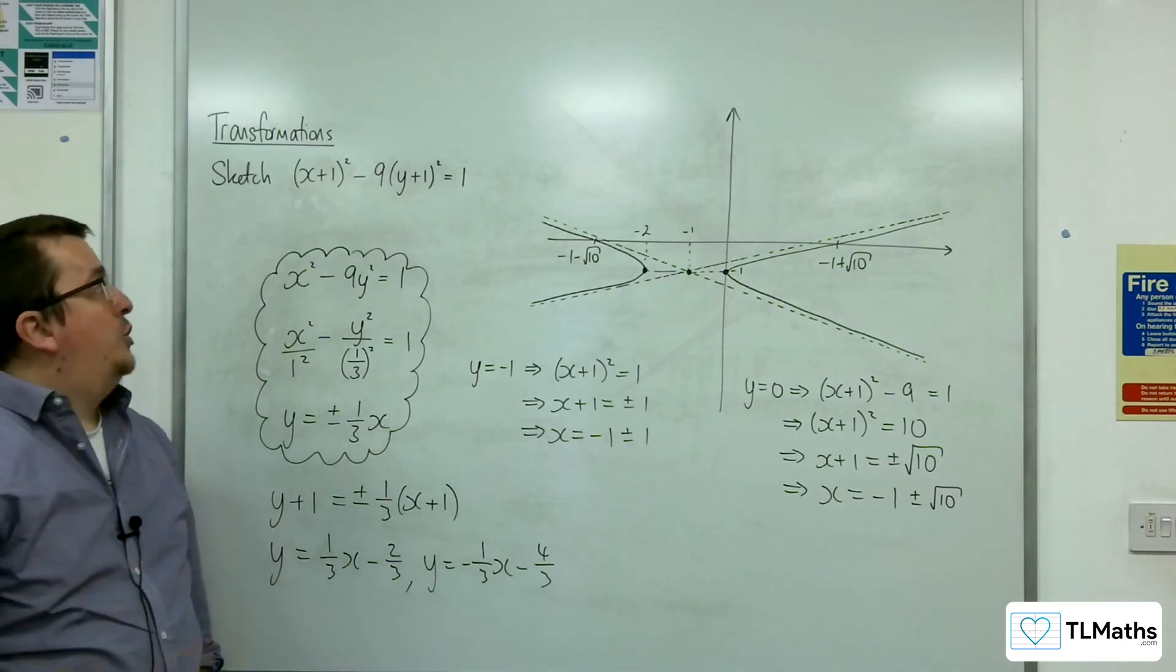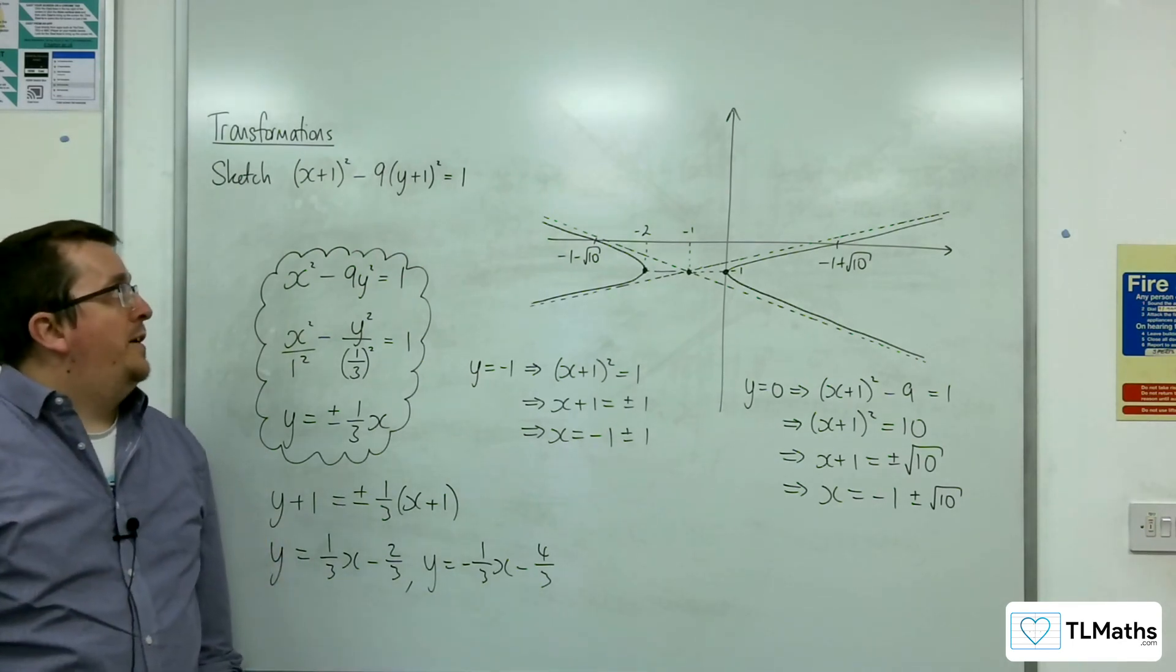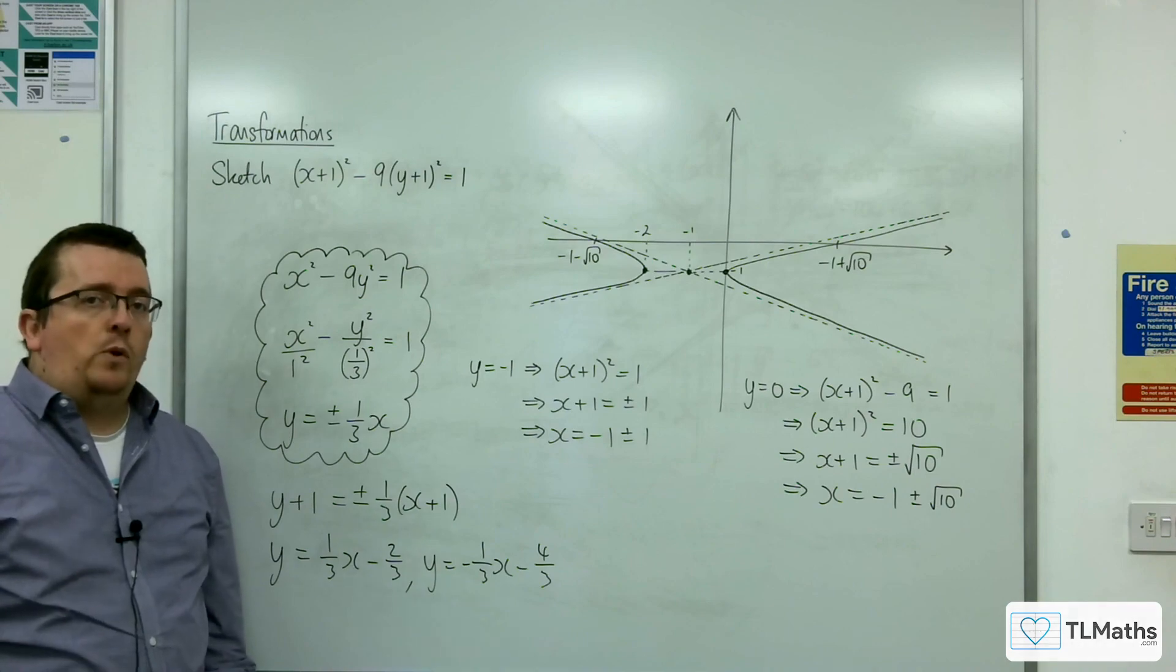And so that is how we can sketch (x+1)² - 9(y+1)² = 1.